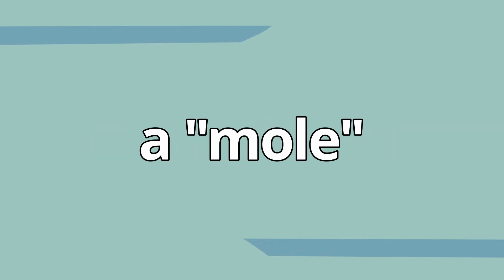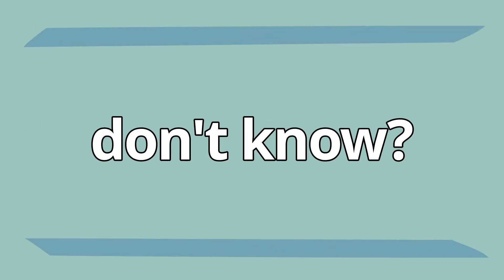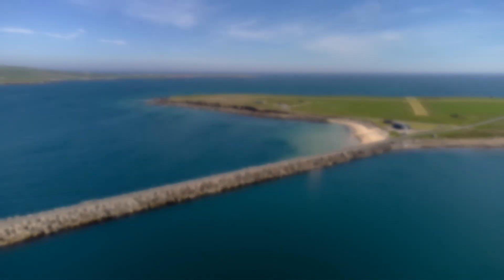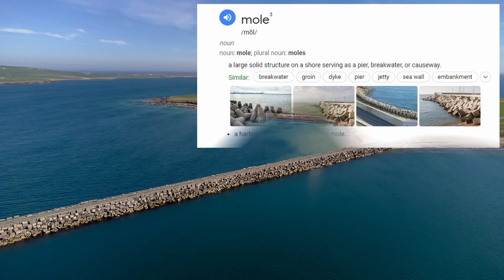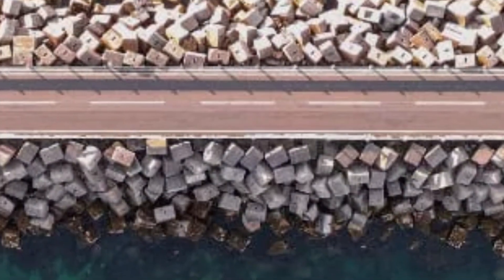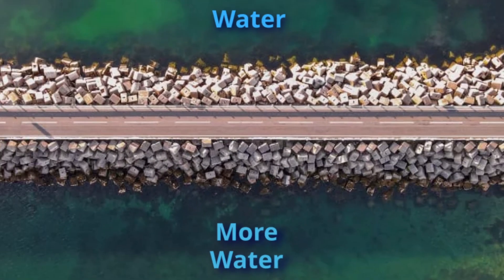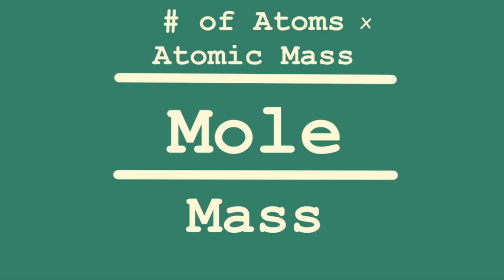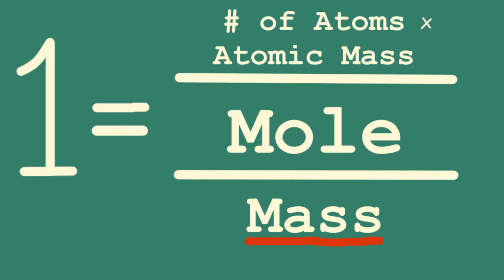What's a definition of a mole that most people don't know? That's right — a wall that separates two bodies of water. But just like a mole divides water, a mole divides the number of atoms with their atomic mass and the substance's mass.